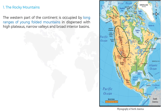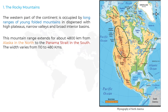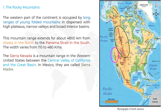The mountain range extends for about 4800 km from Alaska in the north to Panama in the south. The width varies from 110 to 480 km. Sierra Nevada is a mountain range in the western United States, between the Central Valley of California and the Great Basin.